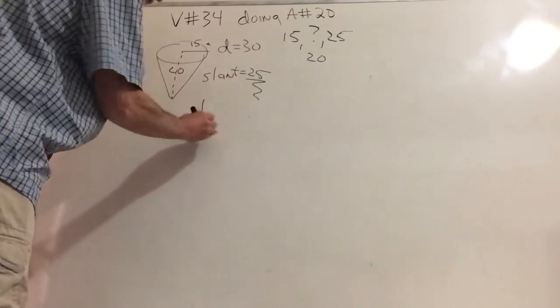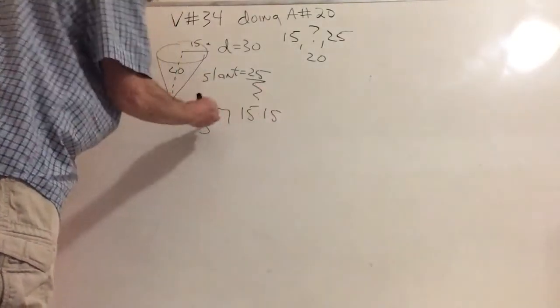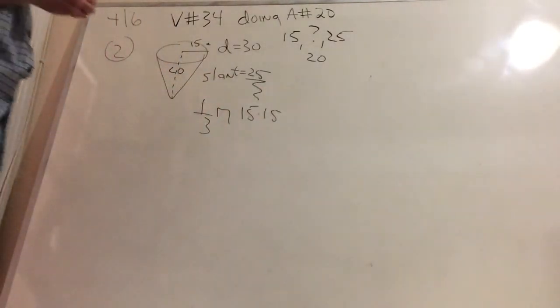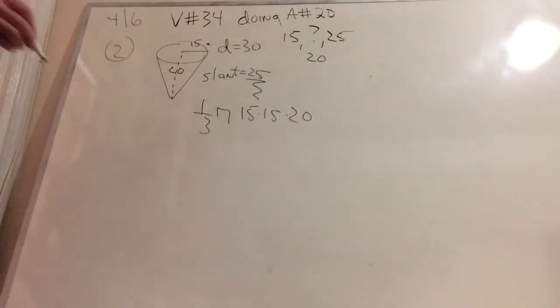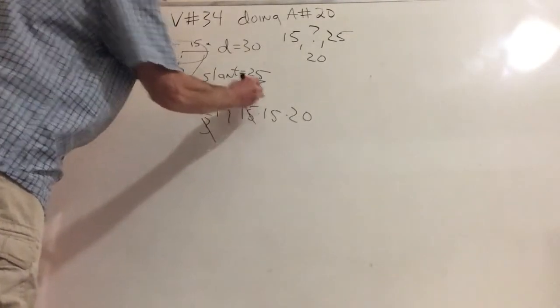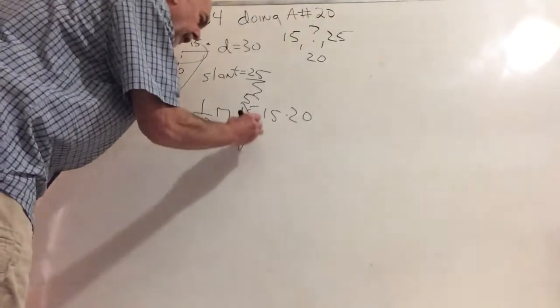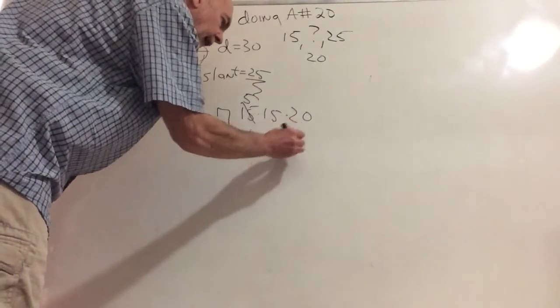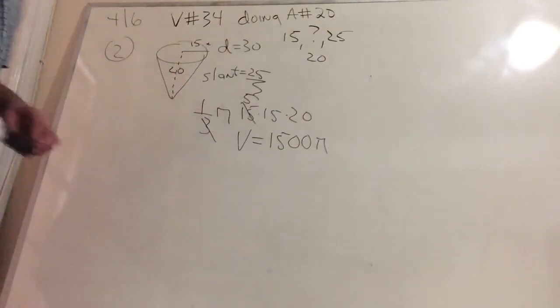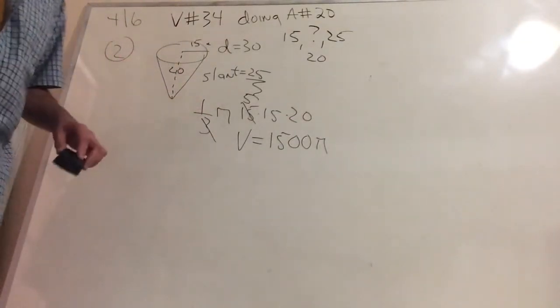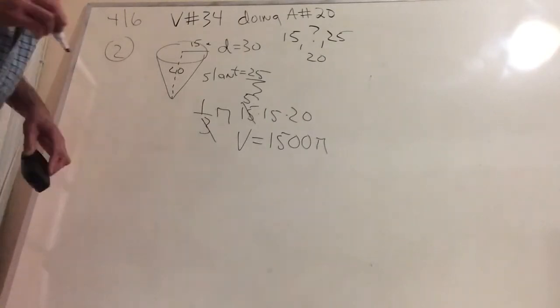So anytime you see a slant that's a multiple of 5, you can easily fill in the numbers without a calculator if that's your choice. And now here we go again. It's 1/3 π 15 times 15, because I'm anticipating getting rid of the 3 times 20. 5 times 15 times 20, you should come up with 1500π. But even if this isn't correct, you should thoroughly understand what we're doing now. Expect it on your upcoming test.